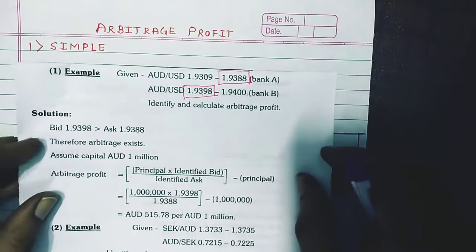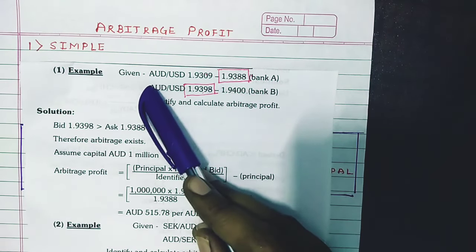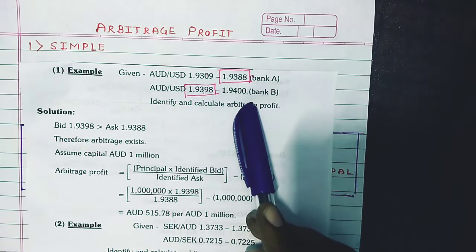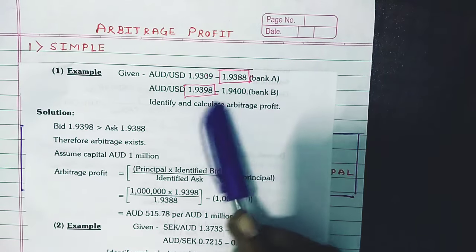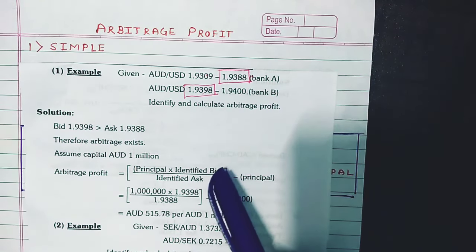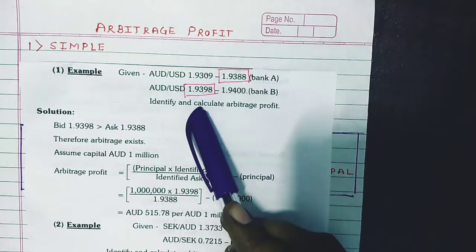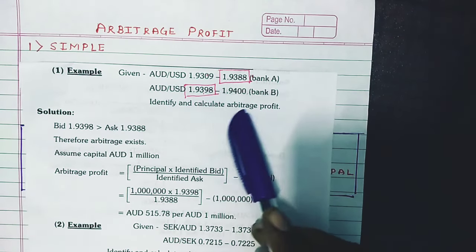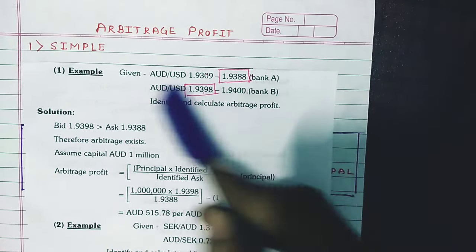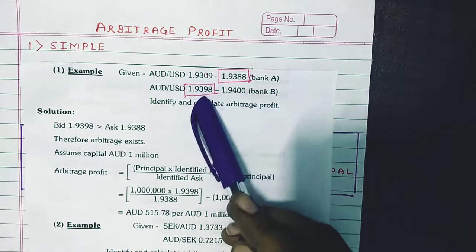Now we are having one question based on simple Arbitrage Profit computation. They have given you the currency pair of Australian dollar / US dollar for Bank A, and they have given you the same currency pair with bid rate and ask rate for Bank B. Those who are not comfortable with the concept of bid rate and ask rate from the banker's point of view and from the retail individual's point of view, in the description box I have given you the link of a previous lecture where I have explained bid and ask rate from both perspectives. Please watch that lecture first. Once your concept is clear, understanding this Arbitrage Profit will take only one or two minutes. So now they have given you the bid rate and ask rate.